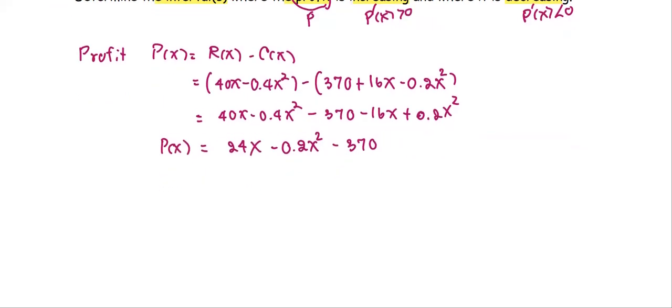After that, we're going to find the derivative, which is the marginal profit. So P prime, the derivative of 24x is 24, derivative of 0.2x squared is 0.4x, derivative of 370 is 0. Now we get P prime equals 24 minus 0.4x.